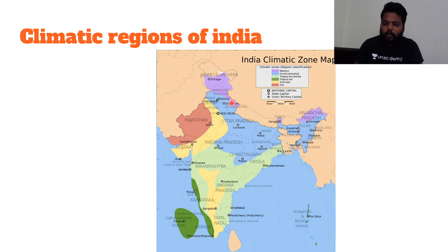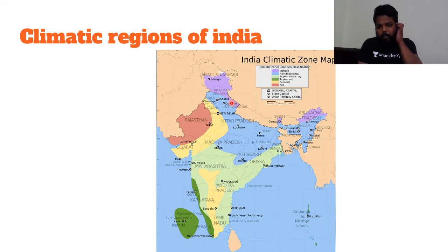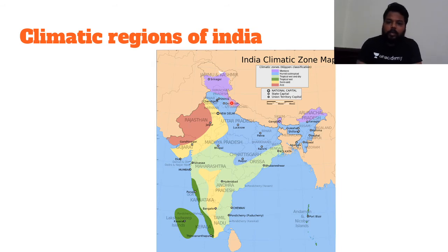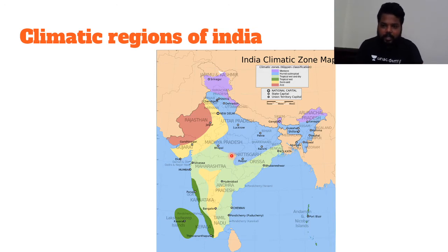There are many geographers and meteorologists who have given climatic divisions. Among these, the Köppen classification is the most accepted one. Whenever we discuss climate or climatic regions, three important points must be covered: temperature, rainfall in that region, and vegetation in that region.